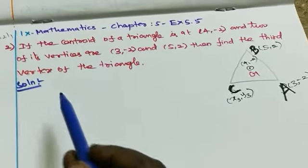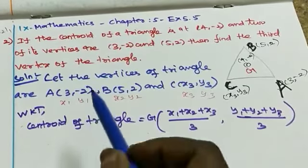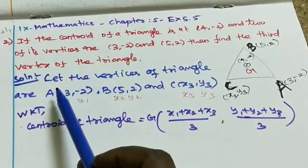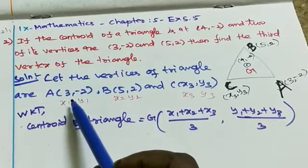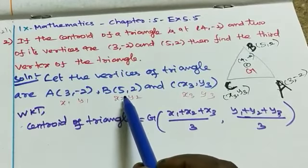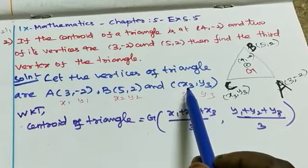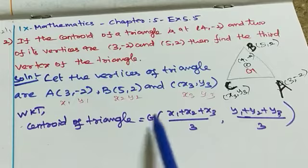To write the given information: Let the vertices of the triangle be A(3, -2), B(5, 2), and C, the third vertex, which we'll take as (x3, y3).